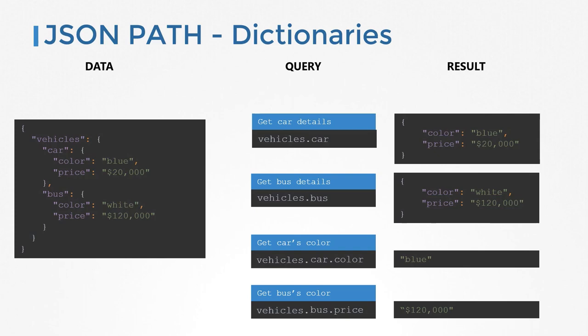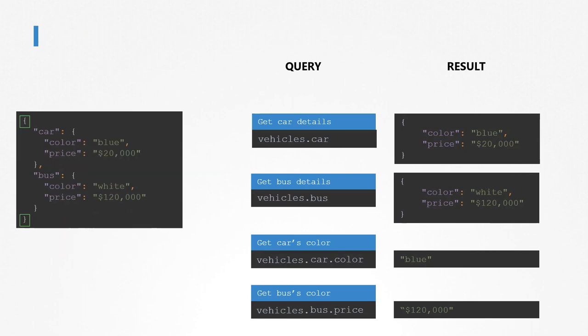However, there is something still missing. If you try to use these queries now, it won't work. Let's go back to our previous data — the one without the vehicles dictionary. Our JSON document has car and bus encapsulated within a pair of curly brackets, so car and bus are two properties within a dictionary. But what dictionary? What is its name? The top-level dictionary which has no name is known as the root element of a JSON document, and the root element is denoted by a dollar sign.